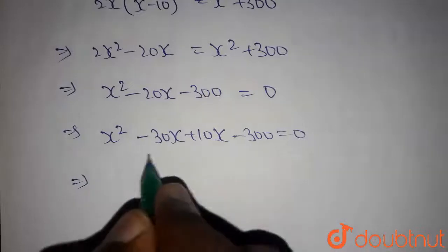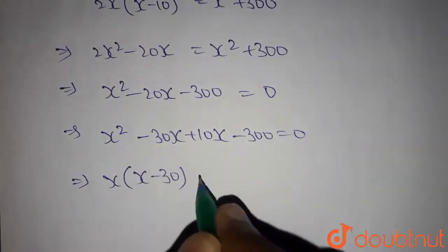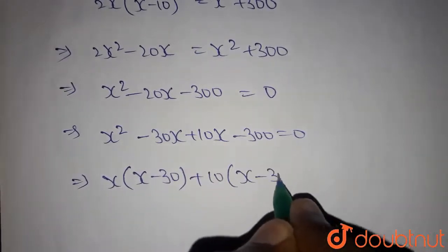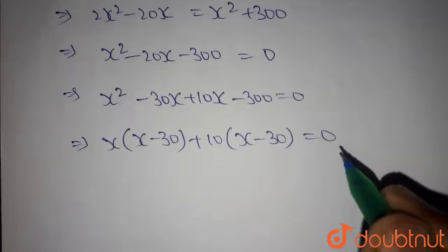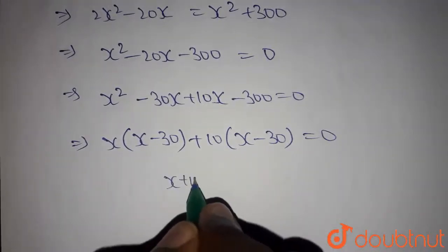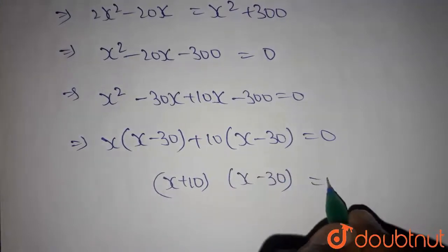So if we take x common in the first two terms, we get x minus 30. Similarly, 10 common in the next two terms, we get x minus 30 which equals 0. If we take x minus 30 common in the two terms, we get x plus 10 into x minus 30 equals 0.